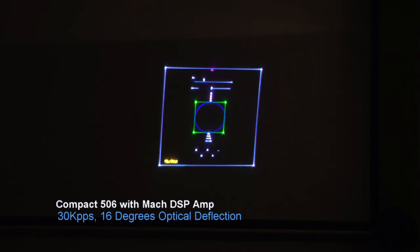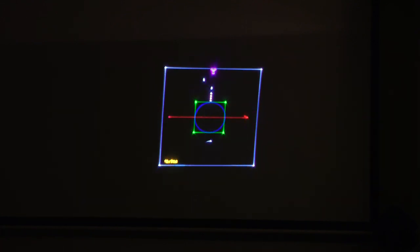We're looking at the 30k test pattern, the one with the really large square that goes all around. We're currently projecting at full width, and we're projecting at 30k PPS and 16 degrees optical. So let's increase that deflection angle and see what we can do.